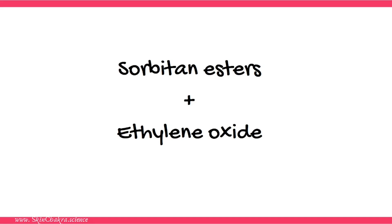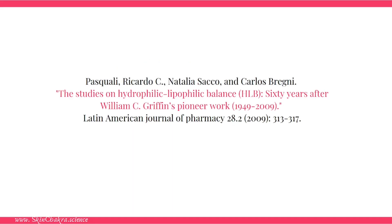Griffin's model was first designed specifically to predict the properties of different sorbitan ester emulsifiers. In the company where Griffin worked, they had prepared different PEG derivatives of sorbitan esters and realized these PEG derivatives had different properties. So they wanted to create a model to predict the properties and applications of these PEG derivatives.